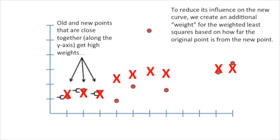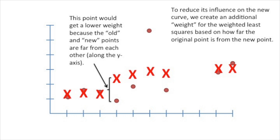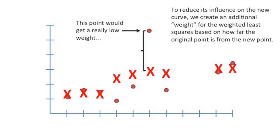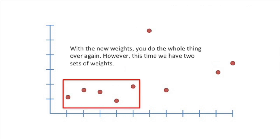Old and new points that are close together along the y-axis get high weights. This point would get a lower weight because the old and new points are far from each other along the y-axis. This point would get a really low weight. With the new weights, you do the whole thing over again. However, this time we have two sets of weights.